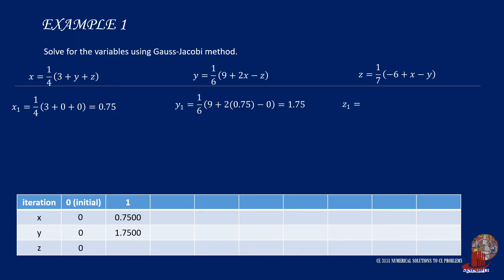For z sub 1, we use the equation one-seventh of negative 6 plus the latest x, which is 0.75, minus the latest y, which was solved previously as 1.75, and this results to negative 1.